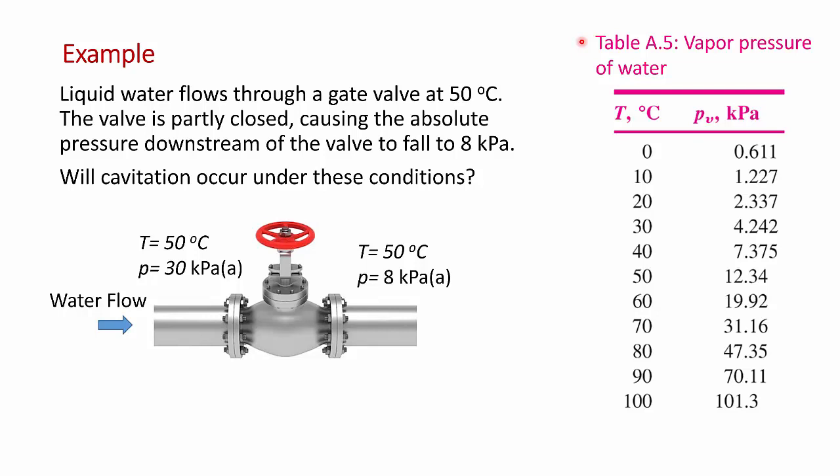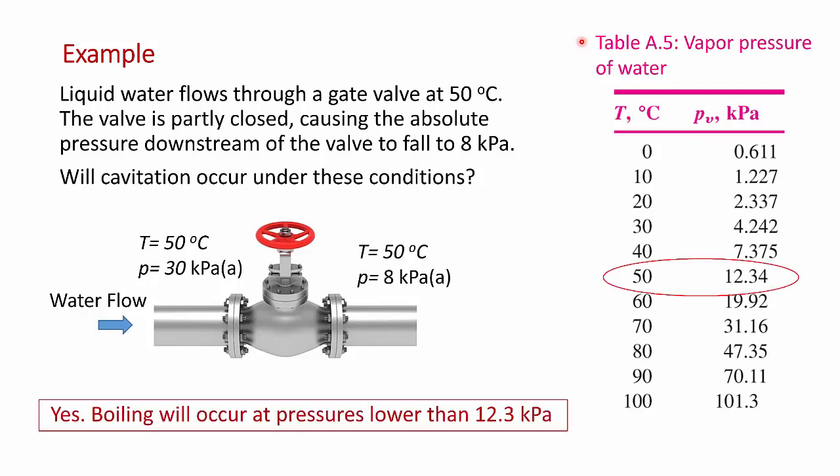So the answer is yes, boiling will occur. At 50 degrees C, water boils at about 12.3 kilopascals. Boiling will occur at all pressures lower than 12.3 kilopascals. The pressure on the downstream side of the valve is 8 kPa.